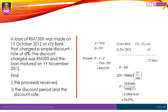To solve this question, first we state the given information. It is said that a loan of RM7000 was made on October 15, 2012. Since the bank charged a discount rate of D%, the amount of RM7000 is the maturity value.